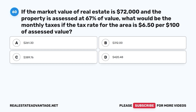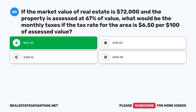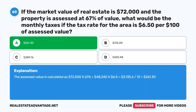Question 60. If the market value of real estate is $72,000 and the property is assessed at 67% of value, what would be the monthly taxes if the tax rate for the area is $6.50 per $100 of assessed value? A. $261.30. B. $312. C. $389.76. D. $420.48. The correct answer is A. $261.30. Assessed value: $72,000 × 67% = $48,240. Annual taxes: $48,240 × ($6.50 ÷ $100) = $3,135.60. Monthly: $3,135.60 ÷ 12 = $261.30.